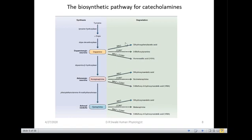On the right side of the pathway we have degradation — these catecholamines are degraded into various acids. Dopamine and epinephrine may be converted to these degradation products, which can be measured in body fluids such as urine. This is a very important measurement used to assess the levels of these catecholamines.